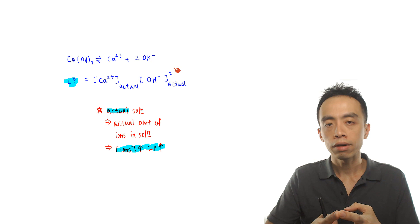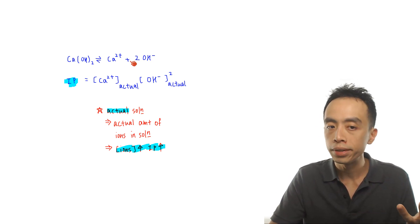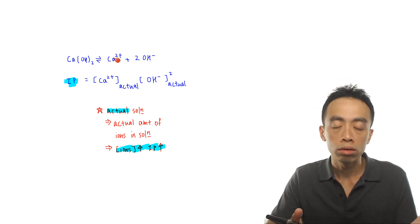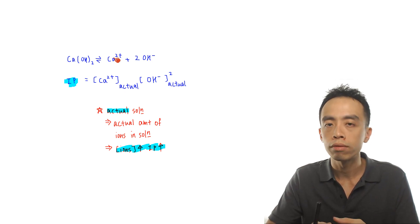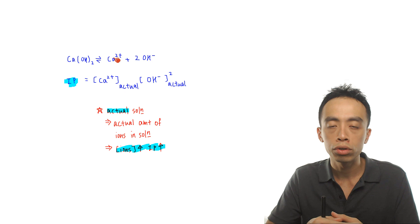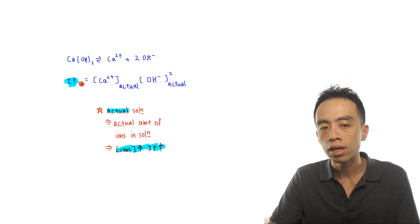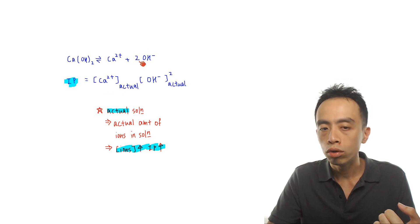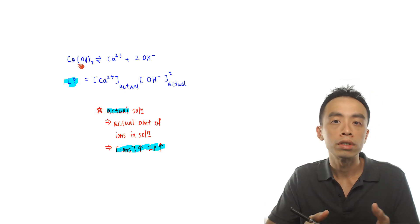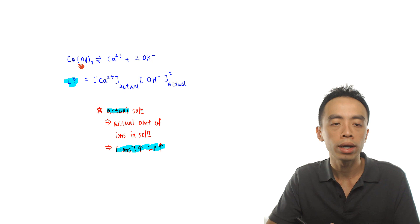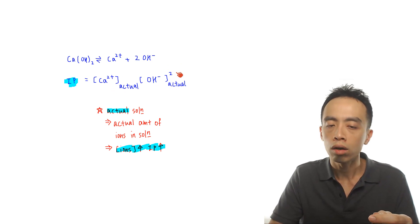Now how about ionic product? If I write out the ionic product for the same dissociation involving calcium hydroxide giving Ca²⁺ and 2OH⁻, interestingly, the ionic product looks exactly the same as solubility product. It is also equal to the concentration of the products raised to the power of the coefficient. The concentration of the solid reactant is constant and doesn't appear, so the ionic product is also [Ca²⁺] × [OH⁻]².